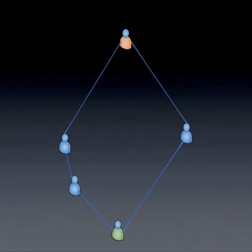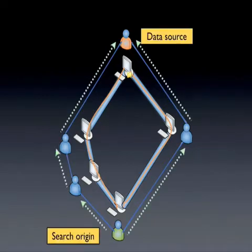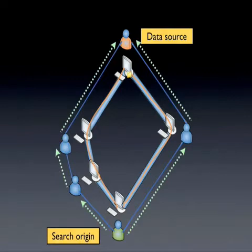This image shows a group of users and the friend relationships among them. OneSwarm maintains network connections between friends' computers. To locate data, OneSwarm searches among directly connected friends, who in turn forward searches to their friends, and so on, until a data source is located.